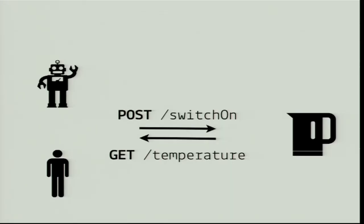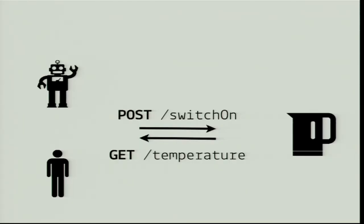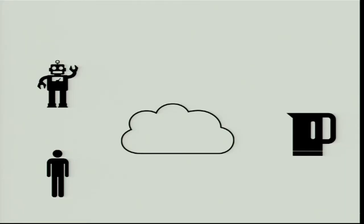How does the Internet of Things work from a high-level perspective? Conceptually this is very simple. You have some actors — human or more automated ones — that want to interact with objects. You want to send commands to objects to control them and retrieve data — get the temperature of a kettle and so on. But even with IPv6 everywhere, the way the network is built, it's just not possible for every human to talk directly to an object. In between there is a cloud that will act as the interface between the objects and the rest of the world.